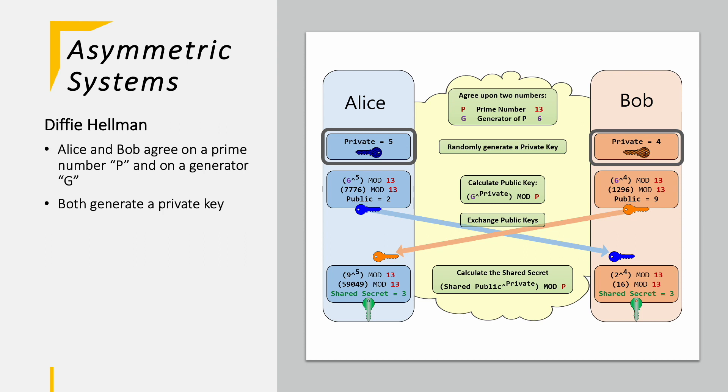Afterwards, they are both utilizing a fixed mathematical equation, taking the generator to the private key power and then modulo it with the prime number. In this example, Alice is taking 6 to the 5th power and modulo it with 13. So the remainder is 2.